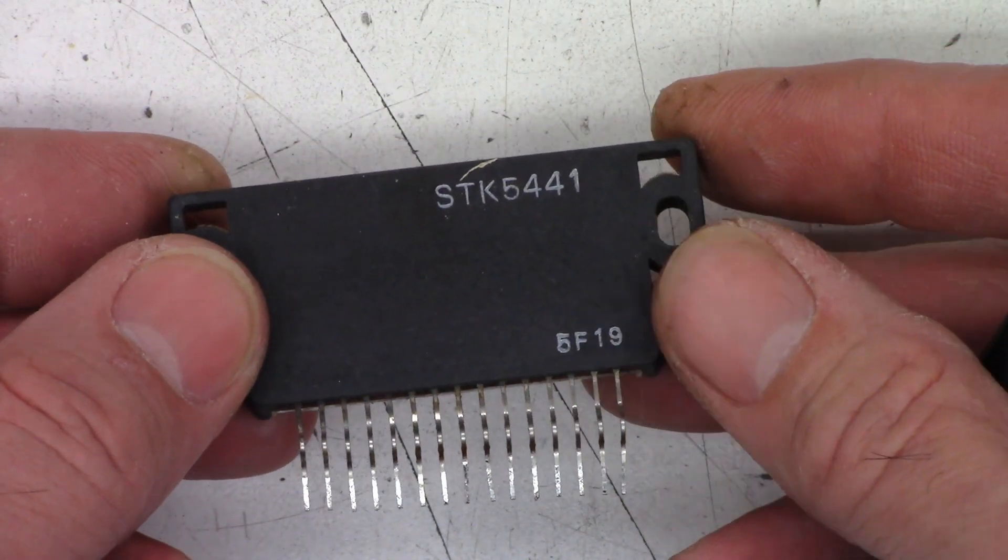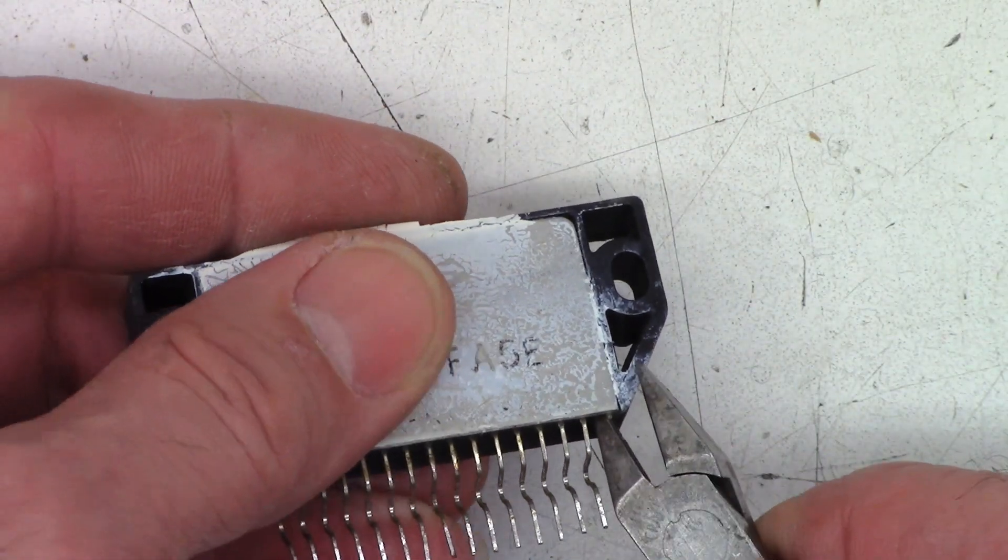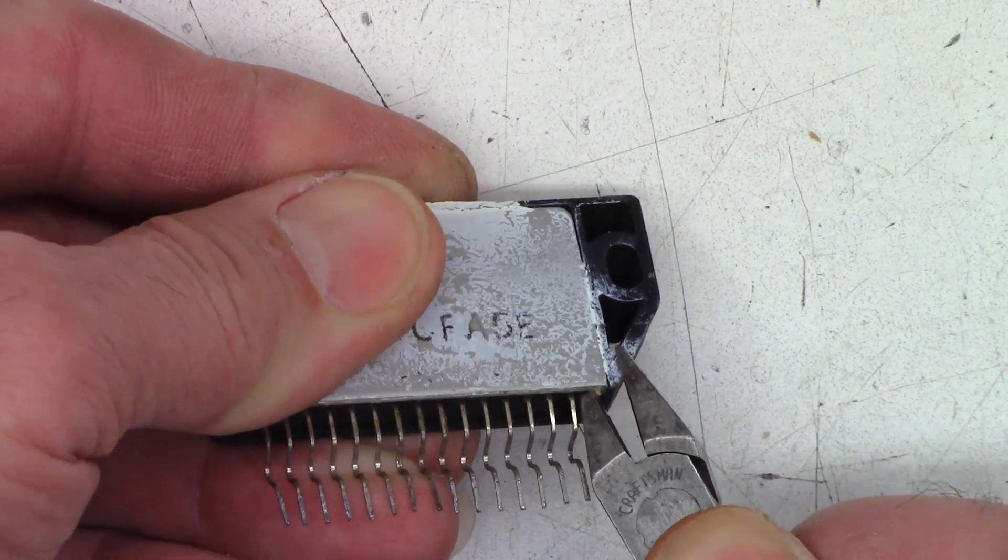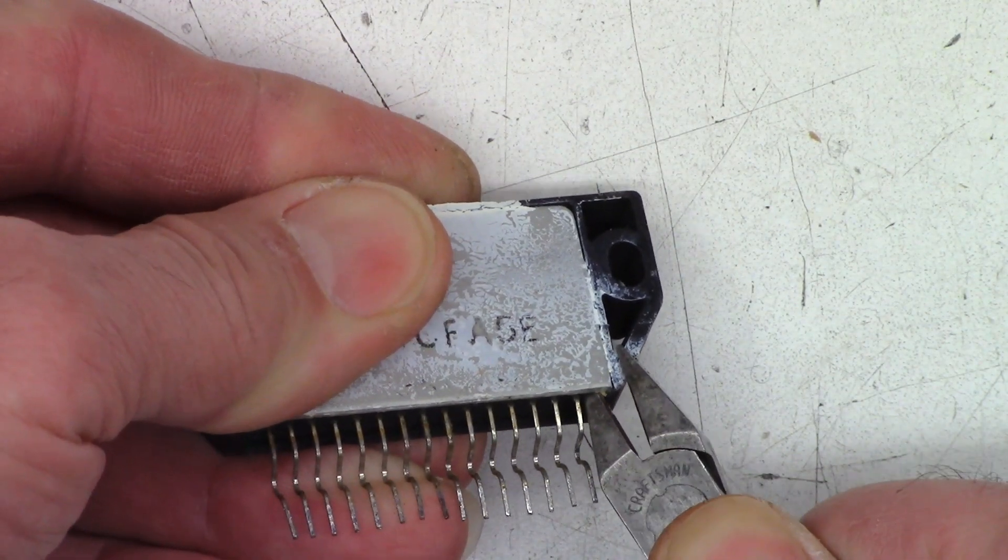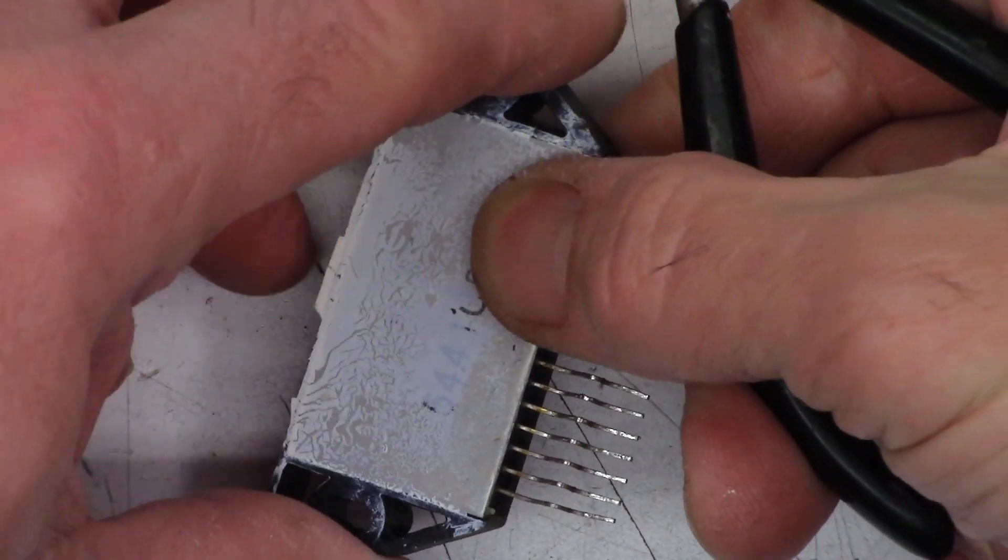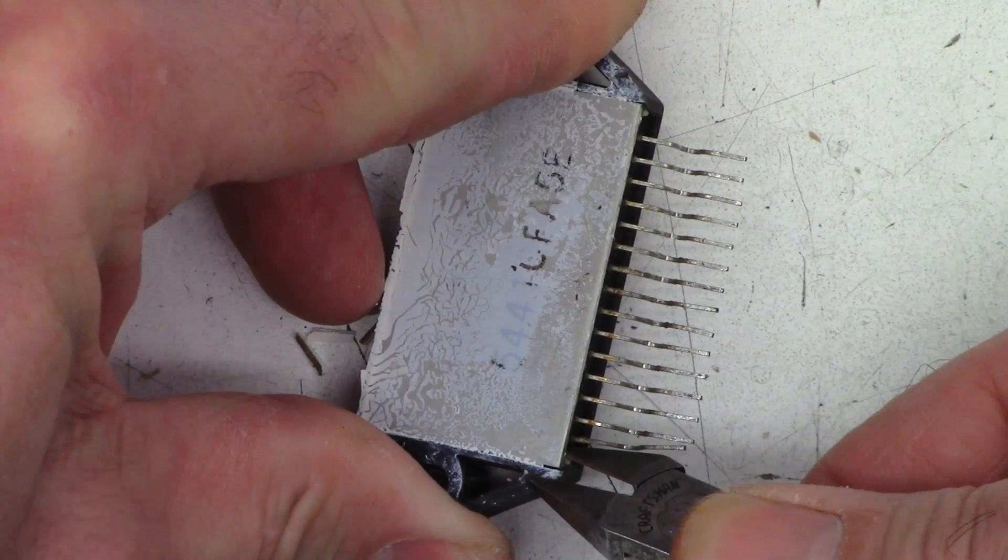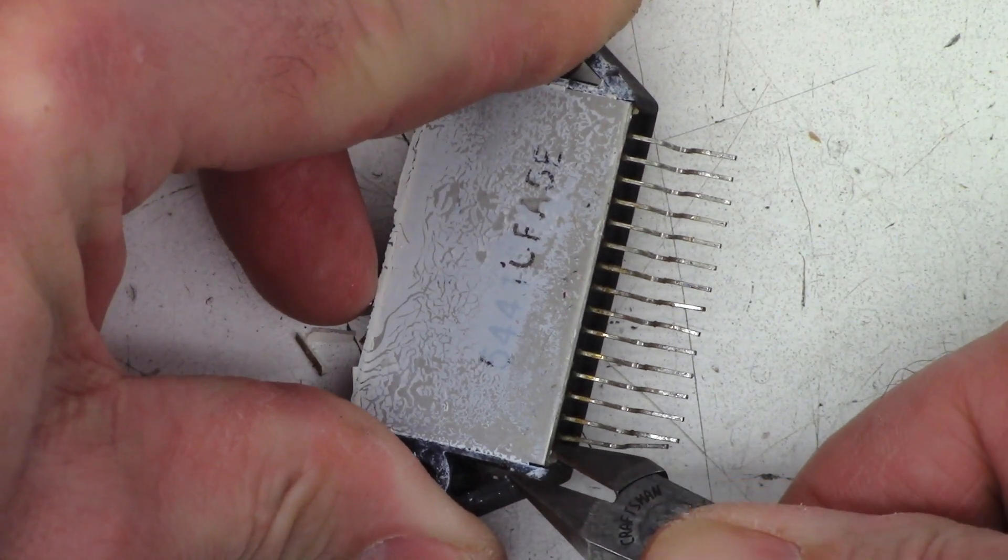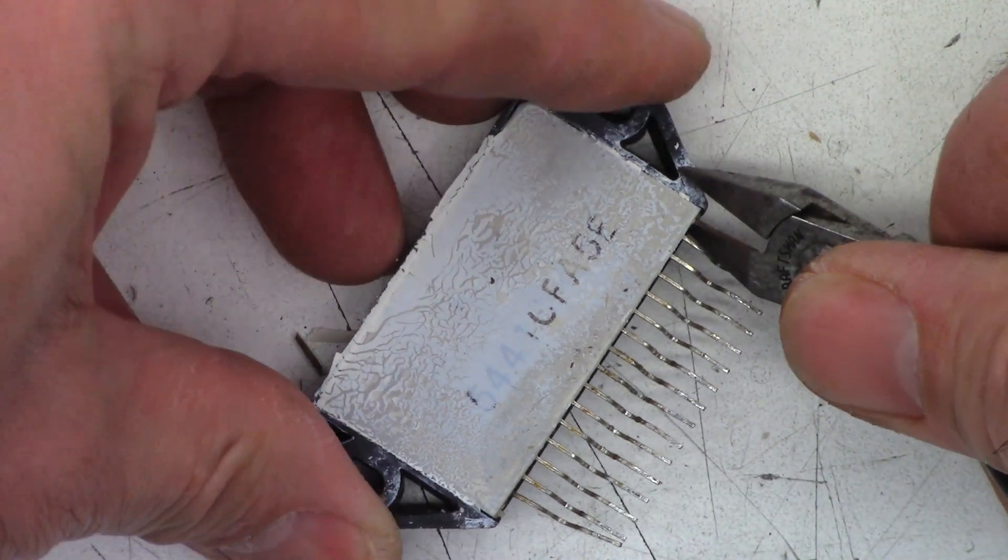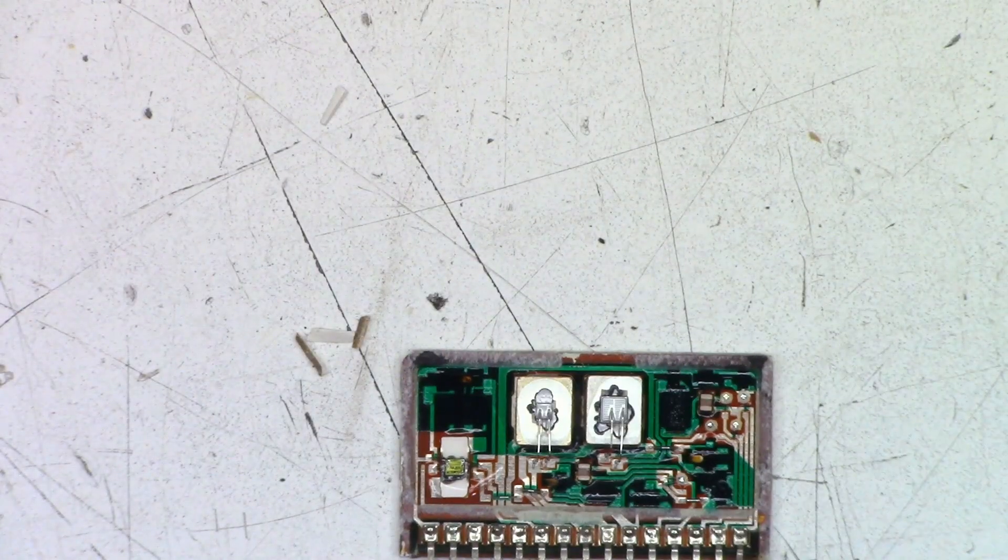So I want to try to pop this thing open and see if we can figure out what went on with this chip. Now sometimes you can just grab these, give them just a little extra inclination, and they'll start to pop apart. Try it on both sides. It will destroy your chip, however, so if you want this to continue working, do not do this. And we are in.